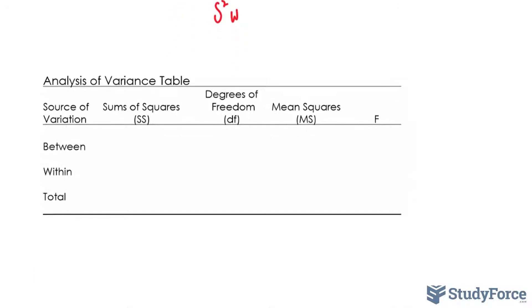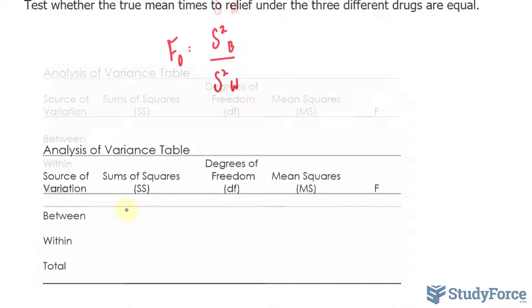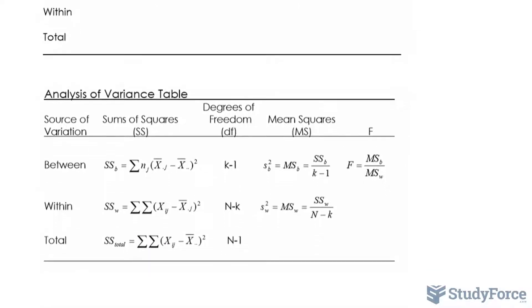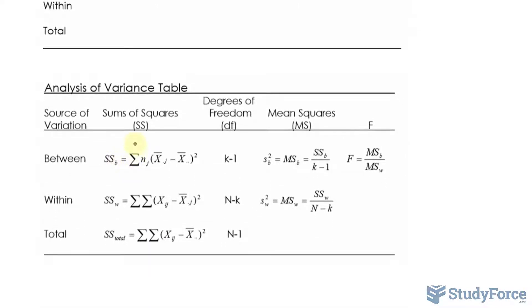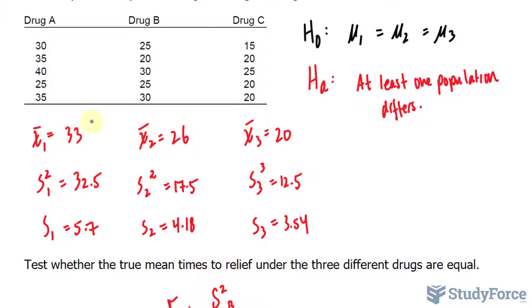Let's go back to this table and begin filling this in. To find out the information for each of these empty cells, we use the following formulas. We'll begin by finding the sum of squares for between the groups. That's done using this formula, where we take the average of the averages. So we take the average of 33, 26, and 20. Let's go ahead and do that.